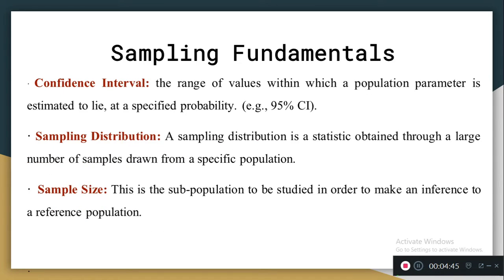The next concept is confidence interval. A confidence interval is the range of values within which a population parameter is estimated to lie at a specified probability. In most nursing research, a confidence interval of 95% — or 0.05 level of significance — is used, and the parameter value is supposed to lie within that range. That is the confidence interval.